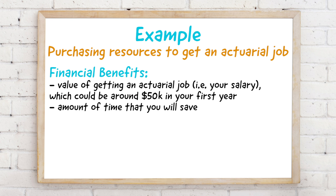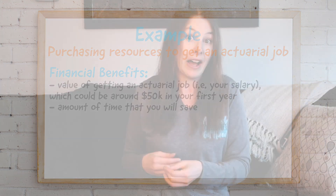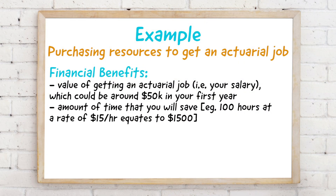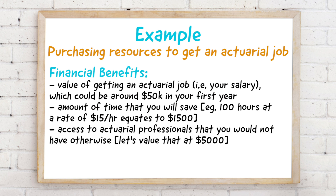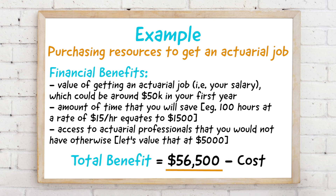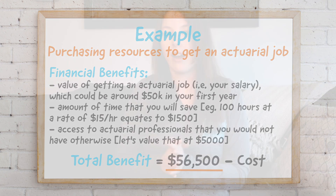For the financial benefit portion of the ROI calculation, you probably considered the value of getting an actuarial job — let's say fifty thousand dollars in your first year. You also probably considered the time you'd save, because your time has value. Let's say these resources save you one hundred hours, and if your time is worth fifteen dollars an hour, that's fifteen hundred dollars. You may also have considered access to actuarial professionals worth about one thousand dollars.